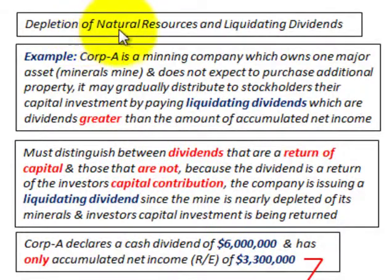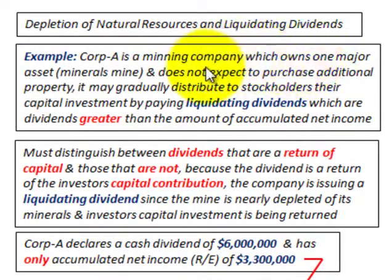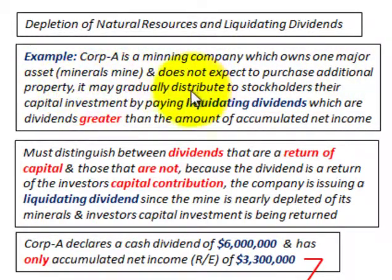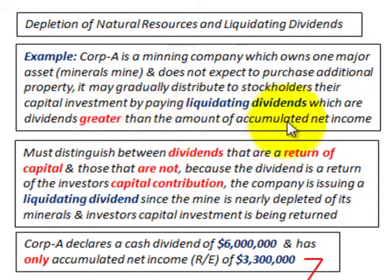What we're going to look at here is depletion of natural resources and liquidating dividends. Our example is where Corporation A is a mining company which owns one major asset — a minerals mine — and does not expect to purchase additional property. It may gradually distribute to the stockholders their capital investment by paying a liquidating dividend, which are dividends greater than the amount of accumulated net income held on its books.